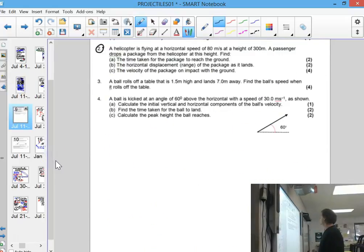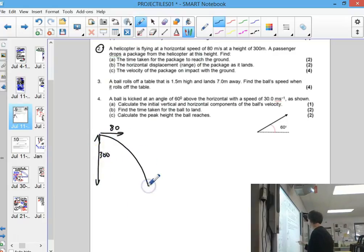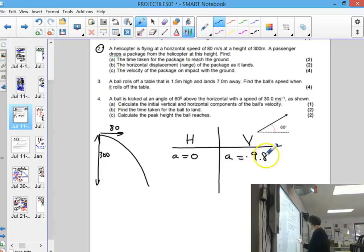Question two: we've got a helicopter flying at a horizontal speed of 80 at a height of 300 meters, and it's going to drop a package. The package is going to go somewhere like this. I tend to look at this motion as being separate horizontal and vertical. Feel free to use columns, it tends to keep the ideas separate. The acceleration here will be zero, the acceleration here will be minus 9.8.